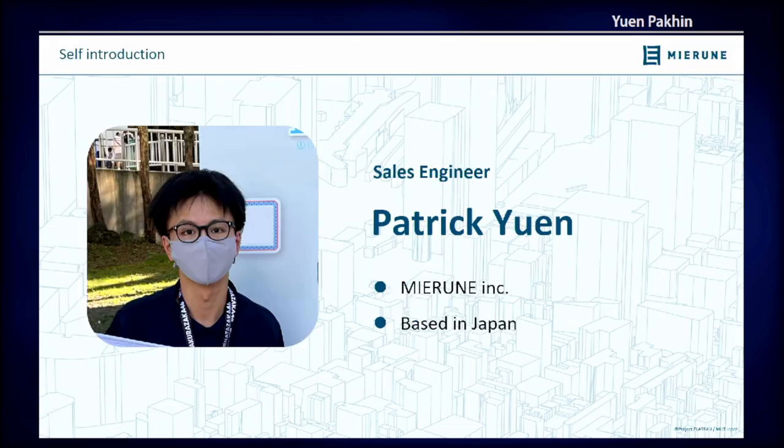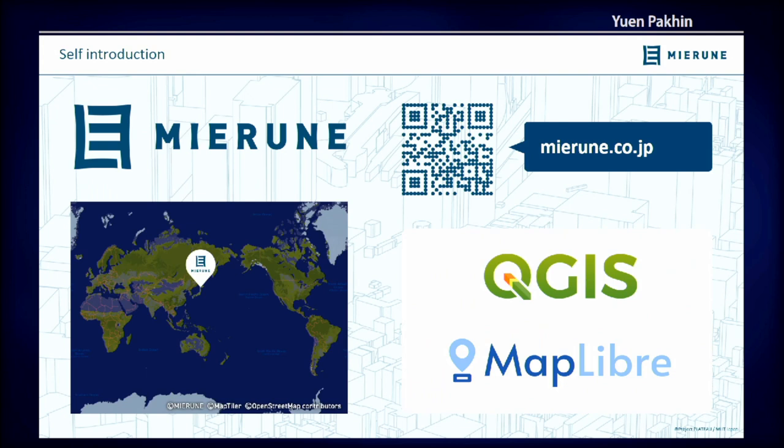As a brief self-introduction, I'm Patrick Yoon, a software engineer at Miye Runet, which is a company based in Japan. At Miye Runet, we develop QGIS plugins and other web map solutions with the MapLibre framework, as we are one of the sponsors of MapLibre and also a member of OSGO Japan.